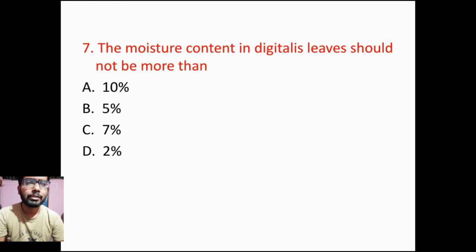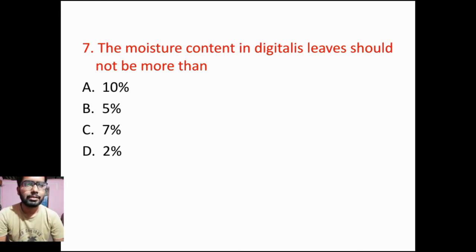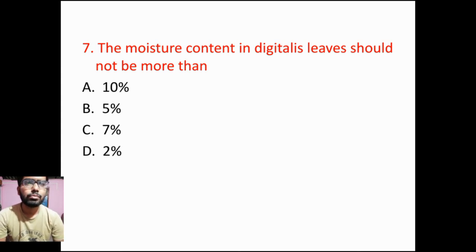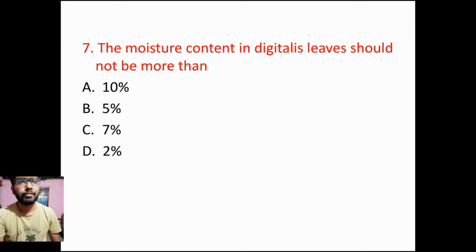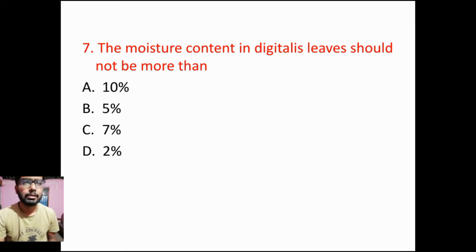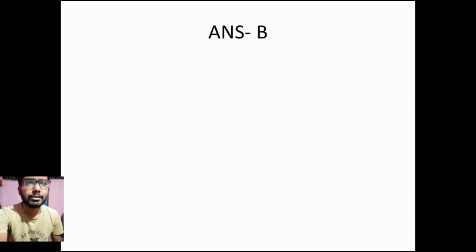Then coming to the next question, this is a very important question. The moisture content of Digitalis leaves should not be more than: Option A: 10%, Option B: 5%, Option C: 7%, Option D: 2%. Option B — 5% — will be the answer.